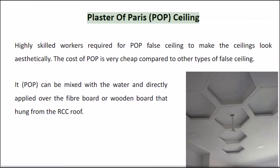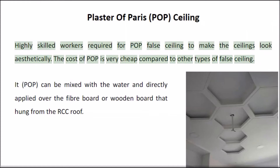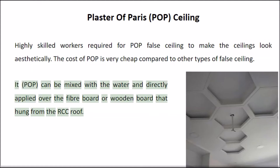Plaster of Paris (POP) Ceiling: highly skilled workers are required for POP fall ceilings to make them look aesthetically pleasing. The cost of POP is very cheap compared to other types of fall ceiling. It can be mixed with water and directly applied over a fiber board or wooden board that is hung from the RCC roof.